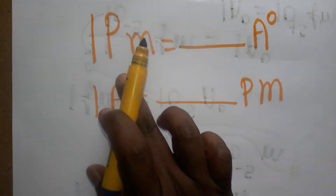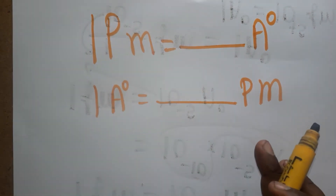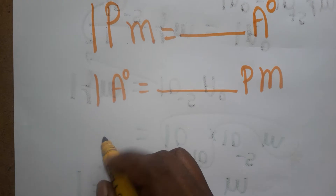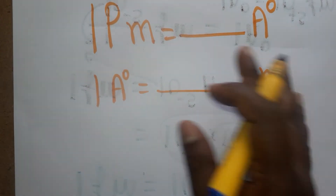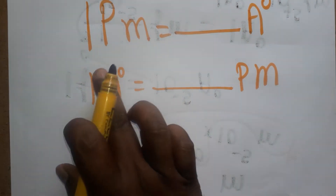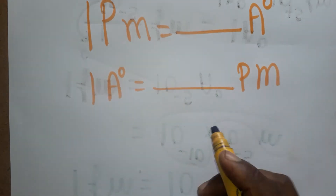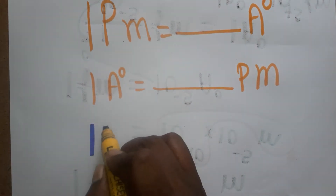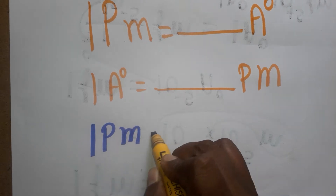Today we are going to learn how to convert picometer to angstrom unit and angstrom unit to picometer. First, we have to relate both units with the meter, then only we can convert these two. So I am going to start by converting each unit with the meter.